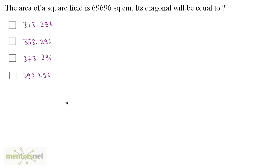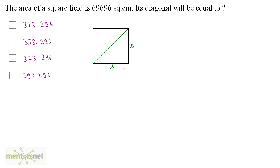The area of a square field is 69,696 square centimeters. What is the length of its diagonal? Consider a square with side s. Applying Pythagoras theorem, the diagonal = √(s² + s²) = √(2s²) = s√2.